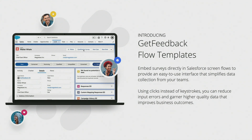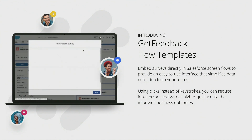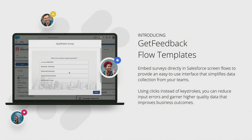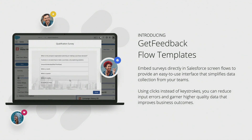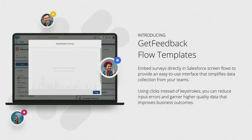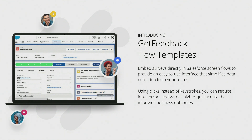Get Feedback flow templates — you may have seen our embedded surveys before. However, the flow templates allow you to essentially take a flow and allow screen flows to capture information, optimizing that data entry and reducing those errors that you see with manual data entry. Using clicks instead of keystrokes reduces data entry error, which helps with your org optimization. It keeps your org clean.